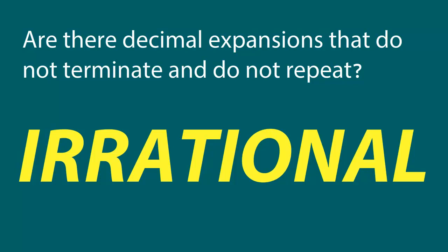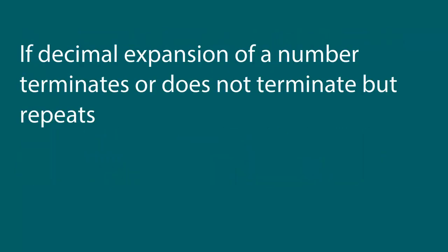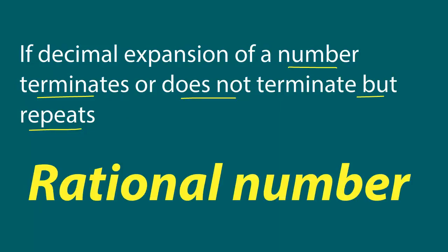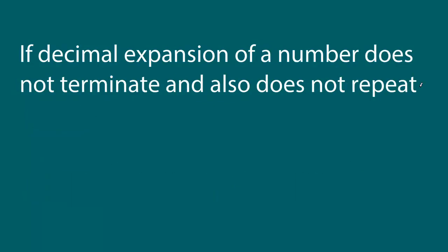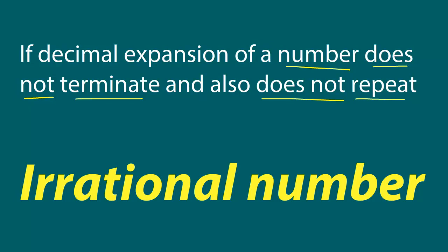One very interesting observation is we can now redefine rational numbers and irrational numbers using their decimal expansion property. We can say that if the decimal expansion of any number terminates or does not terminate but repeats, then that number is a rational number. Similarly, if the decimal expansion does not terminate and also does not repeat, then we call that number an irrational number.